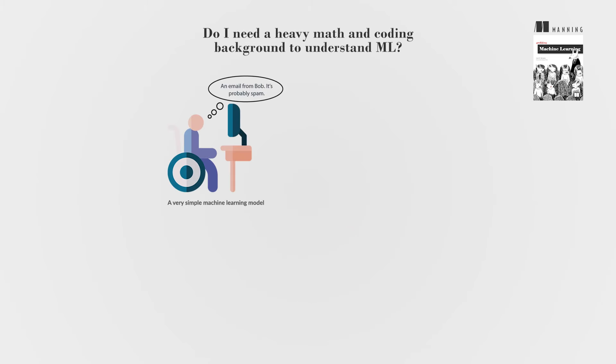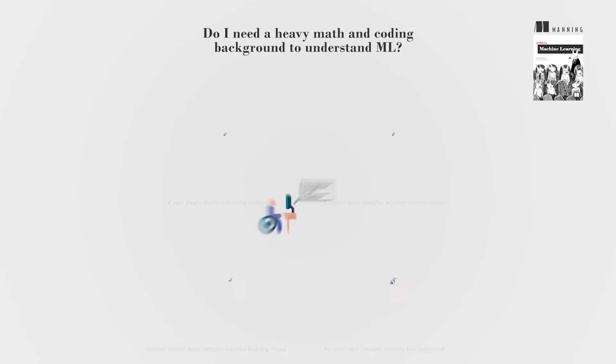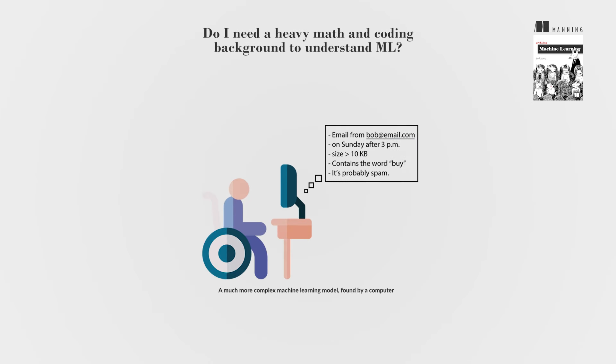For example, in spam detection, we might remember the characteristics of past emails, formulate a model to distinguish spam from non-spam, and predict the nature of new emails. Features like the day of the week or email size can inform these models.